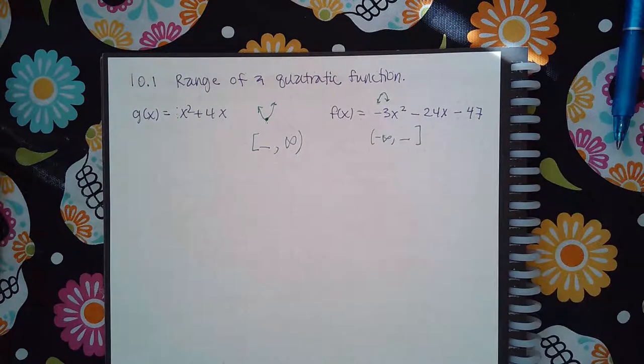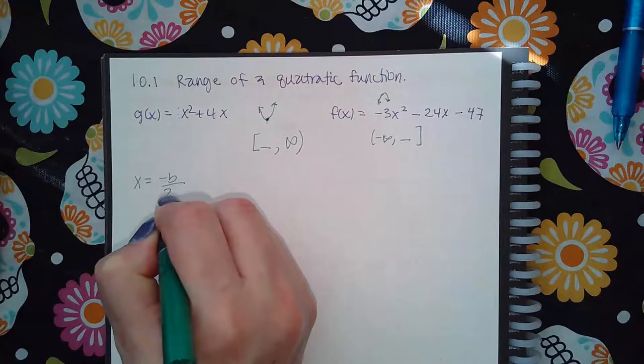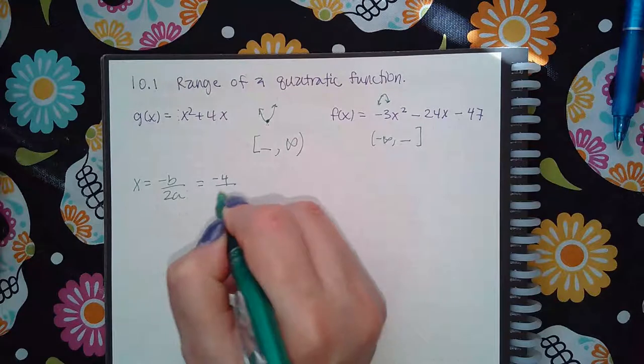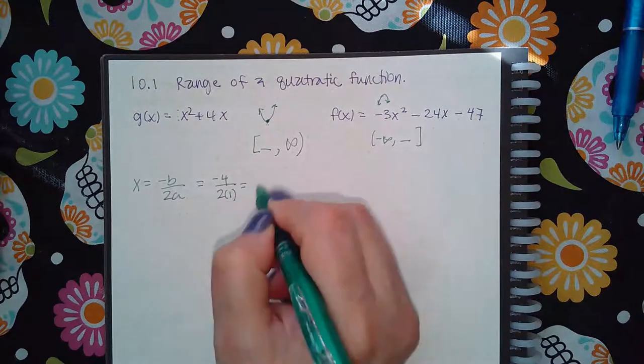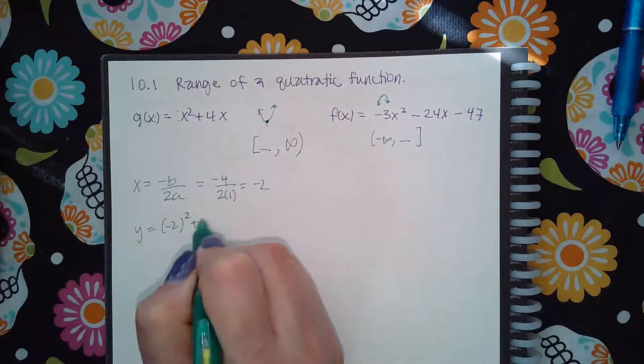But now to find the y-value of the vertex. The x-value I memorized the formula for, right. So we're going to do negative b over two times a, which ends up being two, and then you're just plugging in negative two into the function.